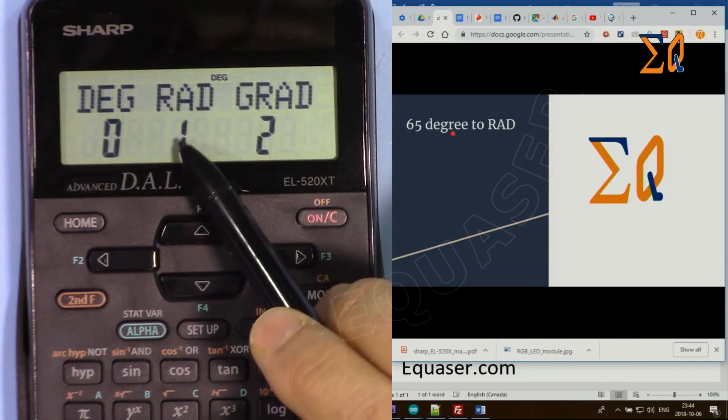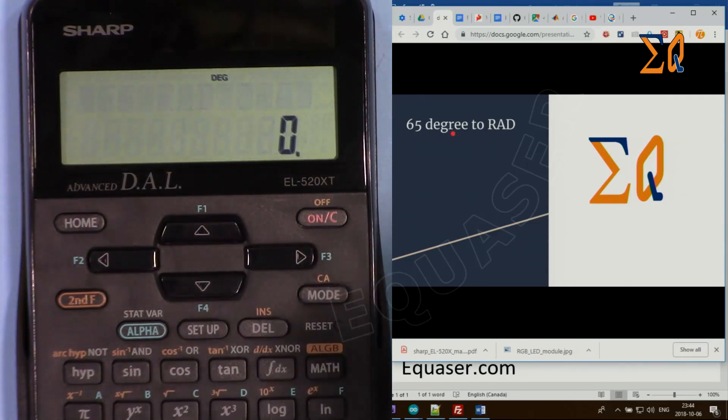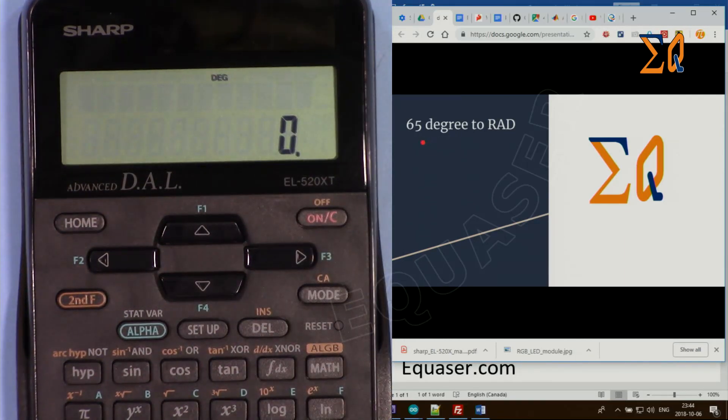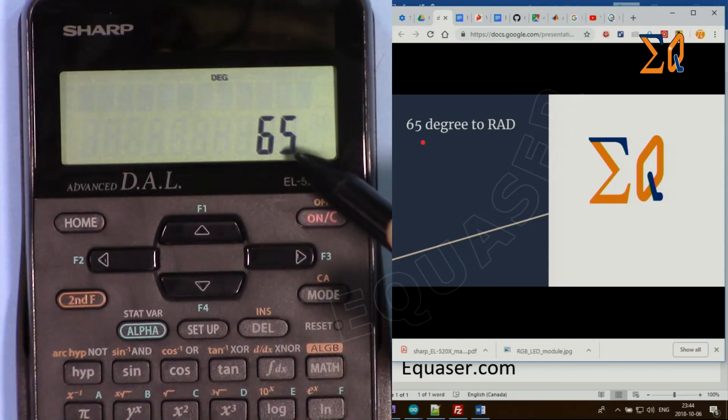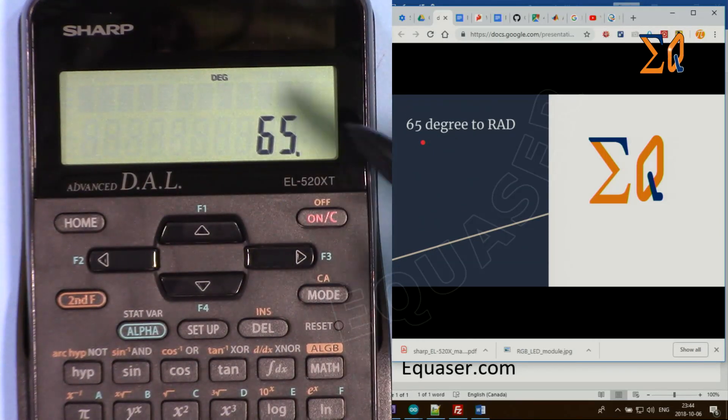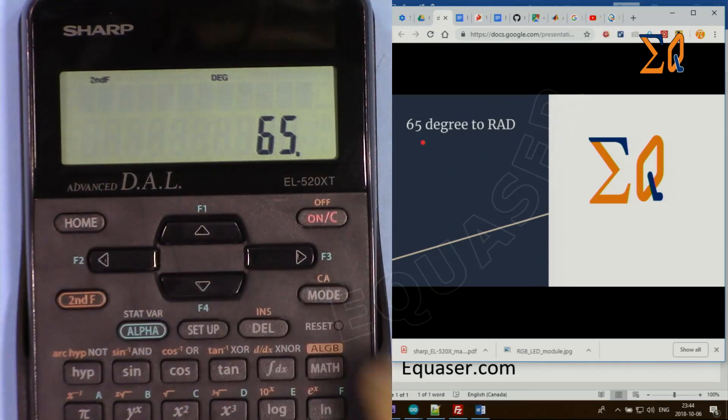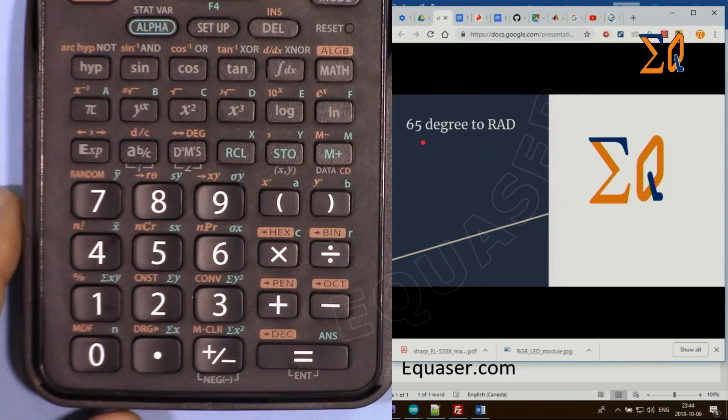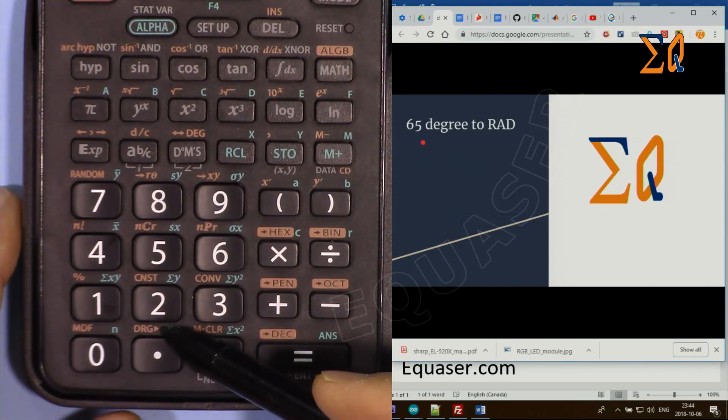If I want radian, I will press 1. For now, I'm pressing 0, so we are in degree mode. Let's enter 65. Once you enter 65, press second function and then the DRG button. From now on, I'm going to use that decimal point button.